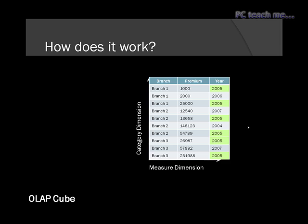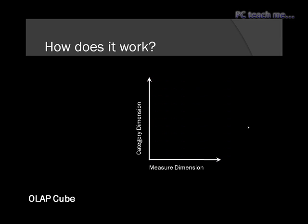So to convert this into what we would call a cube, we would have category dimensions and measure dimensions. The difference between them is a category dimension would be things like branch 1, branch 2, branch 3, and a measure dimension is basically the numbers — this would generally be the premium. The problem with all of this is that it's still two dimensional, so we would have to run one by one to get the results — adding each of the years 2005 together to get our 1.2 million figure. What we're missing is a third dimension, which is time, and that would layer it in a completely different approach.